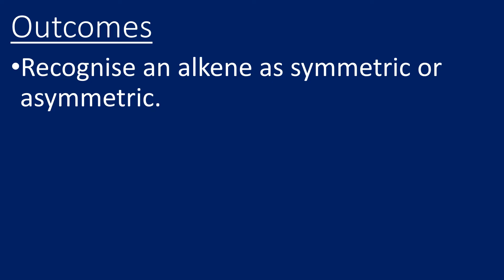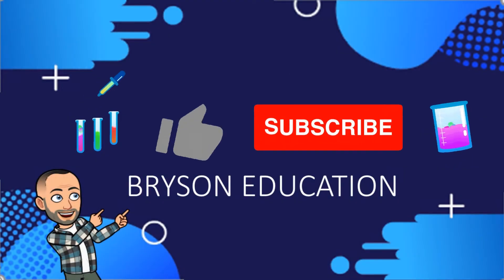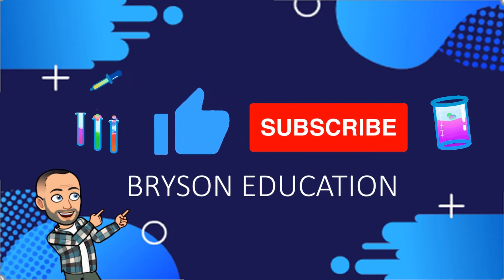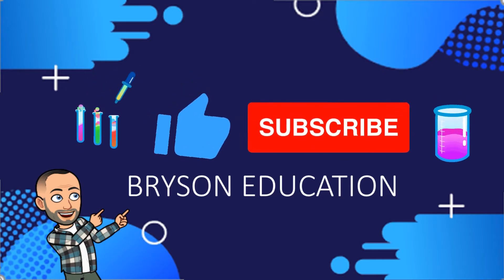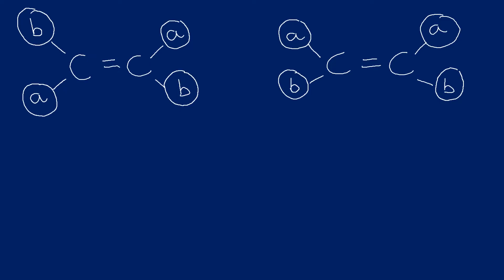If you don't subscribe, can I ask that you do - your support is very much appreciated. Make sure you use the like and comment features and let me know what you think. So let's take a general example. These A's and B's could be any groups that are attached. We can identify these as alkenes because they've got a carbon-carbon double bond.